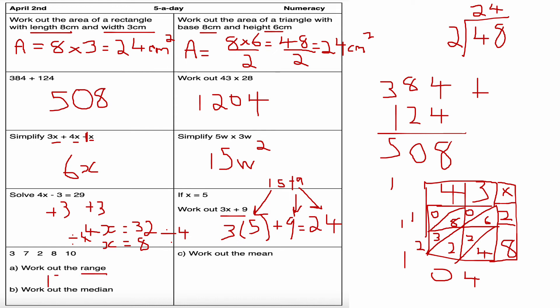Last question: I've got the numbers 3, 7, 2, 8, 10. Work out the range. The range is the biggest number take away the smallest, so 10 take away 2. The difference between the biggest and the smallest is 8. Work out the median. Putting the numbers in order from smallest to biggest: 2, 3, 7, 8, and 10. I've got to find the middle number by crossing off each side respectively. The number I get in the middle is 7, so 7 is my median.